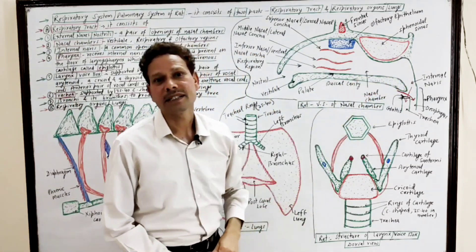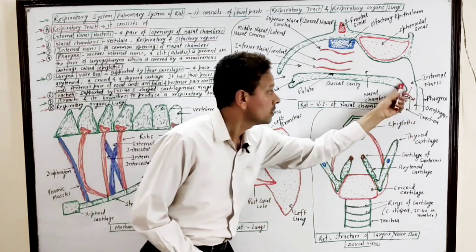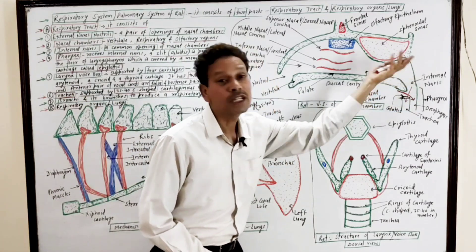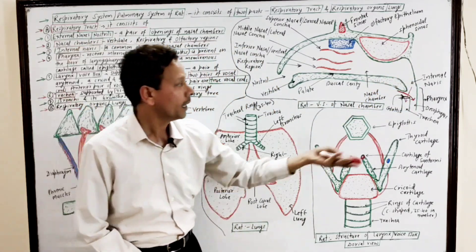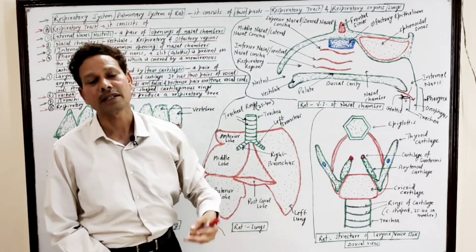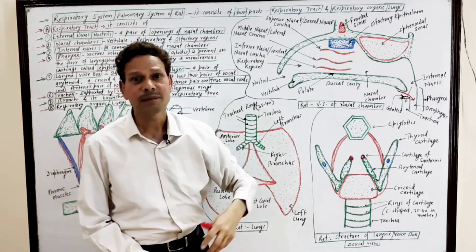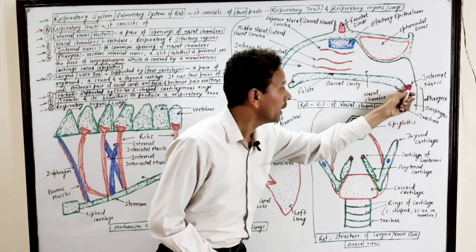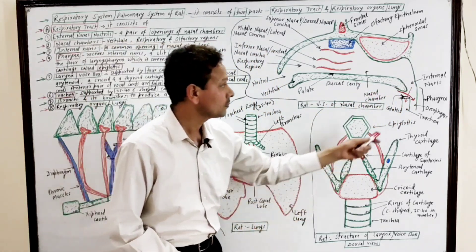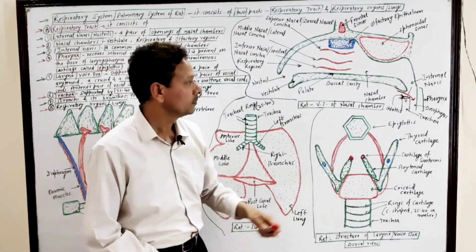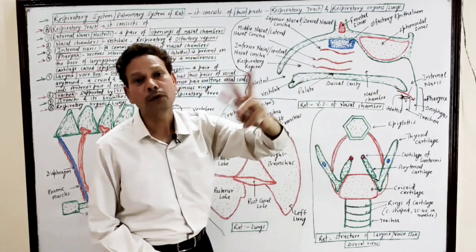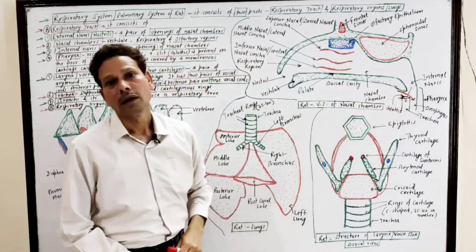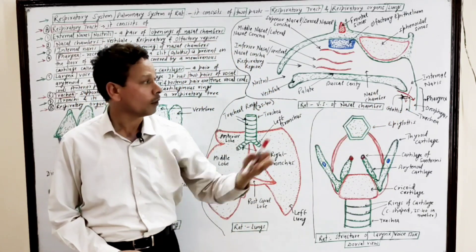The internal nares leads into the next part, that is the pharynx. The pharynx lies in the throat region. The upper part of this pharynx is the nasopharynx, and its lower part is the laryngopharynx. The pharynx is a respiratory chiasma — here the exchange of food and air takes place, meaning the crossing of food and air occurs in this pharynx.